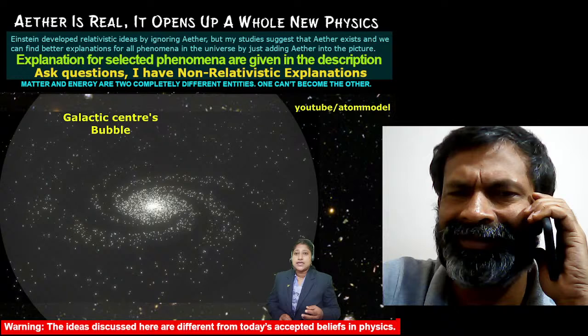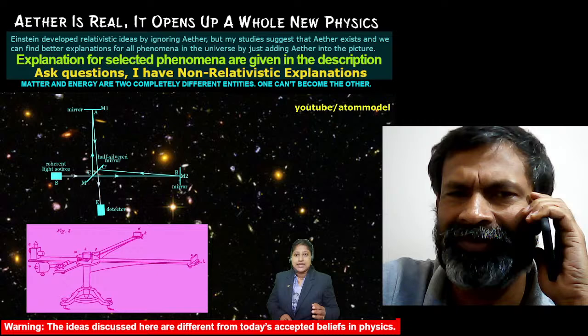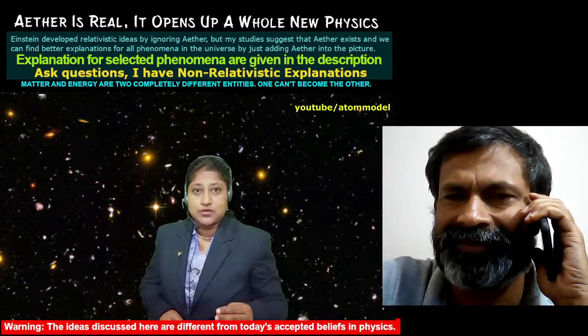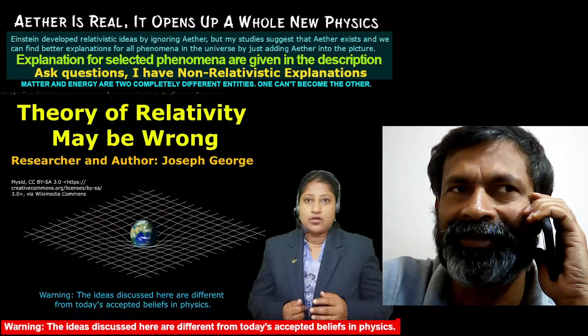Since there is no relative motion between the earth and the aether — that is, the aether is stationary relative to the earth — the Michelson-Morley type experiment cannot detect the aether. However, there are other ways to detect the presence of aether. We will discuss about it in the coming videos. I am Joseph. Thank you for watching.